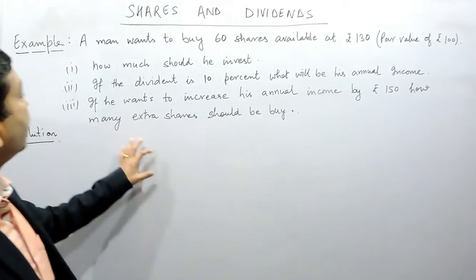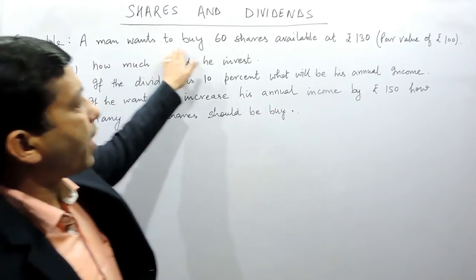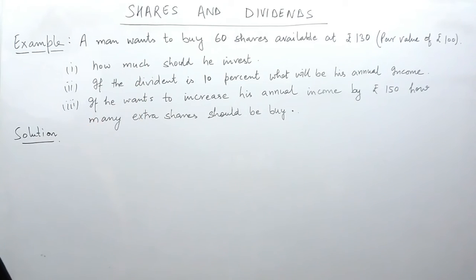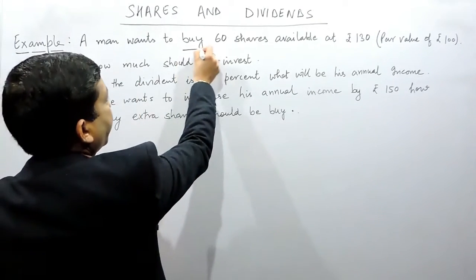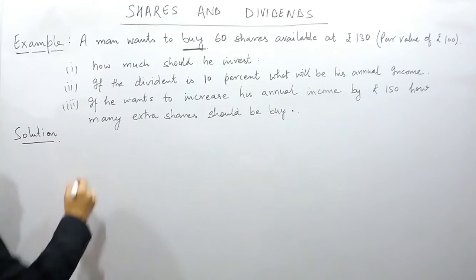Hello everyone. Now as this example goes, a man wants to buy 60 shares available at rupees 130, par value of rupees 100. Now this term is very important. If he is planning to buy the shares, it means he will buy at rupees 130. The par value of rupees 100 means the company has sold 100 rupees share for rupees 100 in the past, but today the market value of the share is 130 rupees.